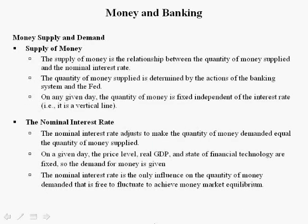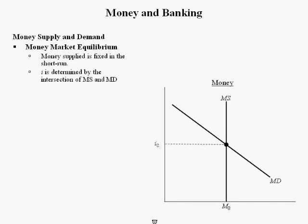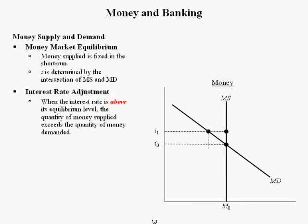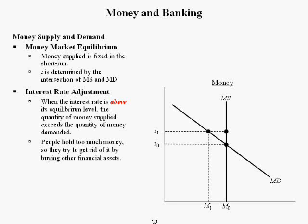The nominal interest rate is the only influence on the quantity of money demanded that is free to fluctuate to achieve money market equilibrium. In the money market, we have money demand, which is downward sloping, and money supply, which is perfectly inelastic — a vertical line. The nominal interest rate is determined by the intersection of money supply and money demand. When the nominal interest rate is above its equilibrium level, the quantity of money supplied (M₀) exceeds the quantity of money demanded (M₁). People hold too much money, so they try to get rid of it by buying other financial assets like CDs and bonds. Demand for financial assets increases, prices of these assets rise, and the interest rate falls.